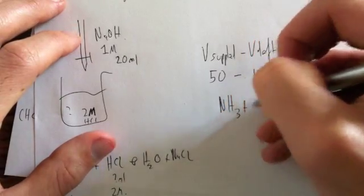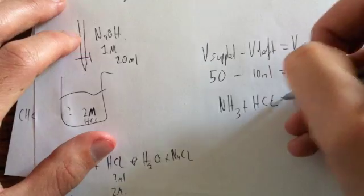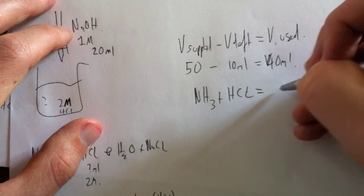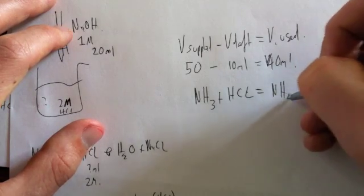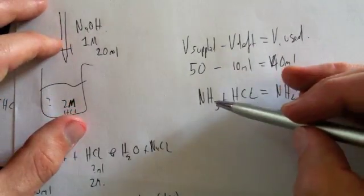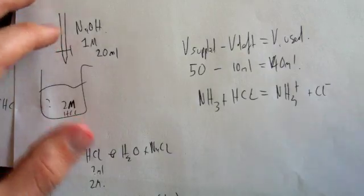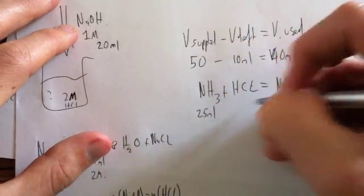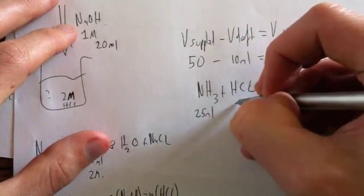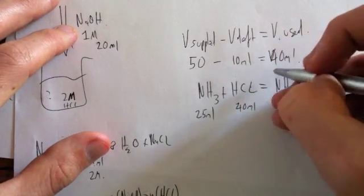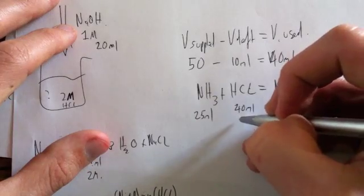So we have NH3 plus HCl equals NH4 plus, plus Cl negative. Because obviously this is acting as a base, and that's your acid. So therefore, we have, how much? We had 25 ml of this, and we had 40 ml, because that's how much reacted. And that was 2 molar.